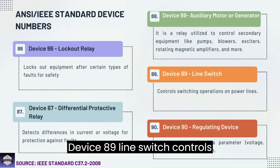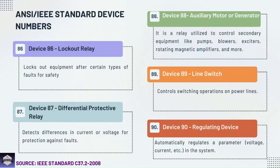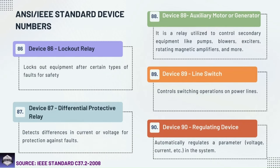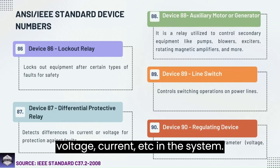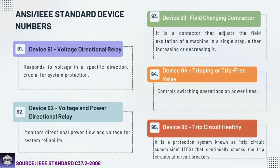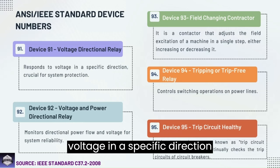Device 89: Line switch — controls switching operations on power lines. Device 90: Regulating device — automatically regulates a parameter such as voltage, current, etc., in the system. Device 91: Voltage directional relay — responds to voltage in a specific direction, crucial for system protection.